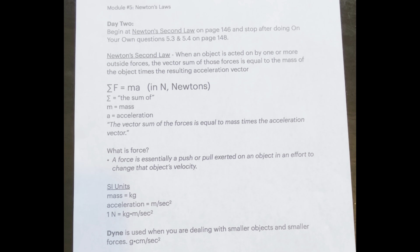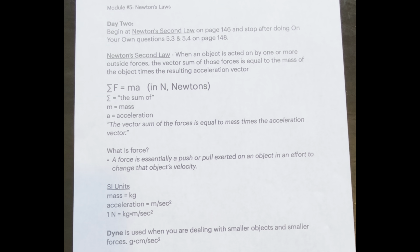Newton needed more to explain motion than just the law of inertia. After all, that very law references the fact that an object's velocity can change if the object is acted on by an outside force. Newton's Second Law explains how this can happen. It states that when an object is acted on by one or more outside forces, the vector sum of those forces is equal to the mass of the object times the resulting acceleration vector.